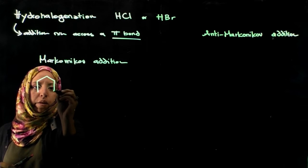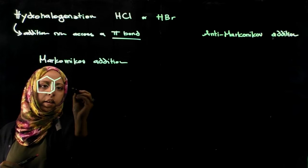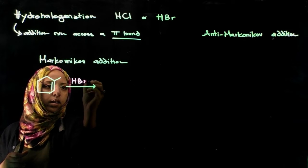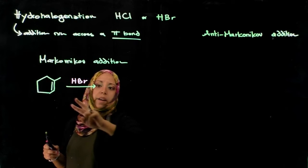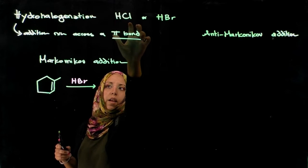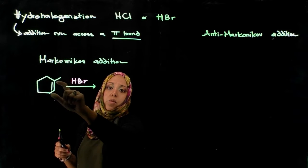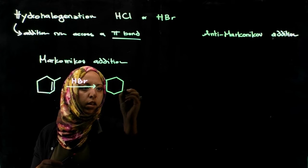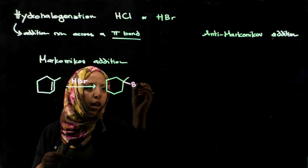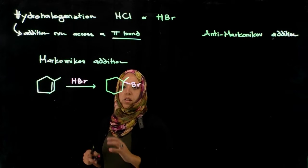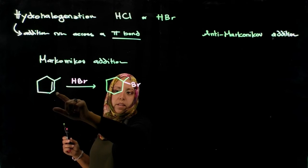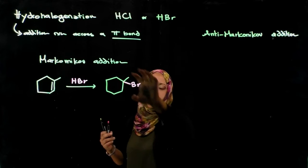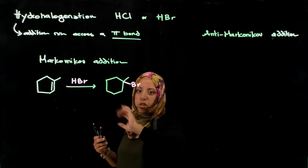We're going to consider an example of methylcyclohexene. If we react methylcyclohexene with hydrogen bromide, it's an addition reaction — we're adding two groups across a pi bond: the hydrogen and the bromine. In a Markovnikov addition, the halogen adds to the more substituted position of that carbon-carbon double bond. You could think of it as the hydrogen adding to the less substituted position, or the halogen adding to the more substituted position.